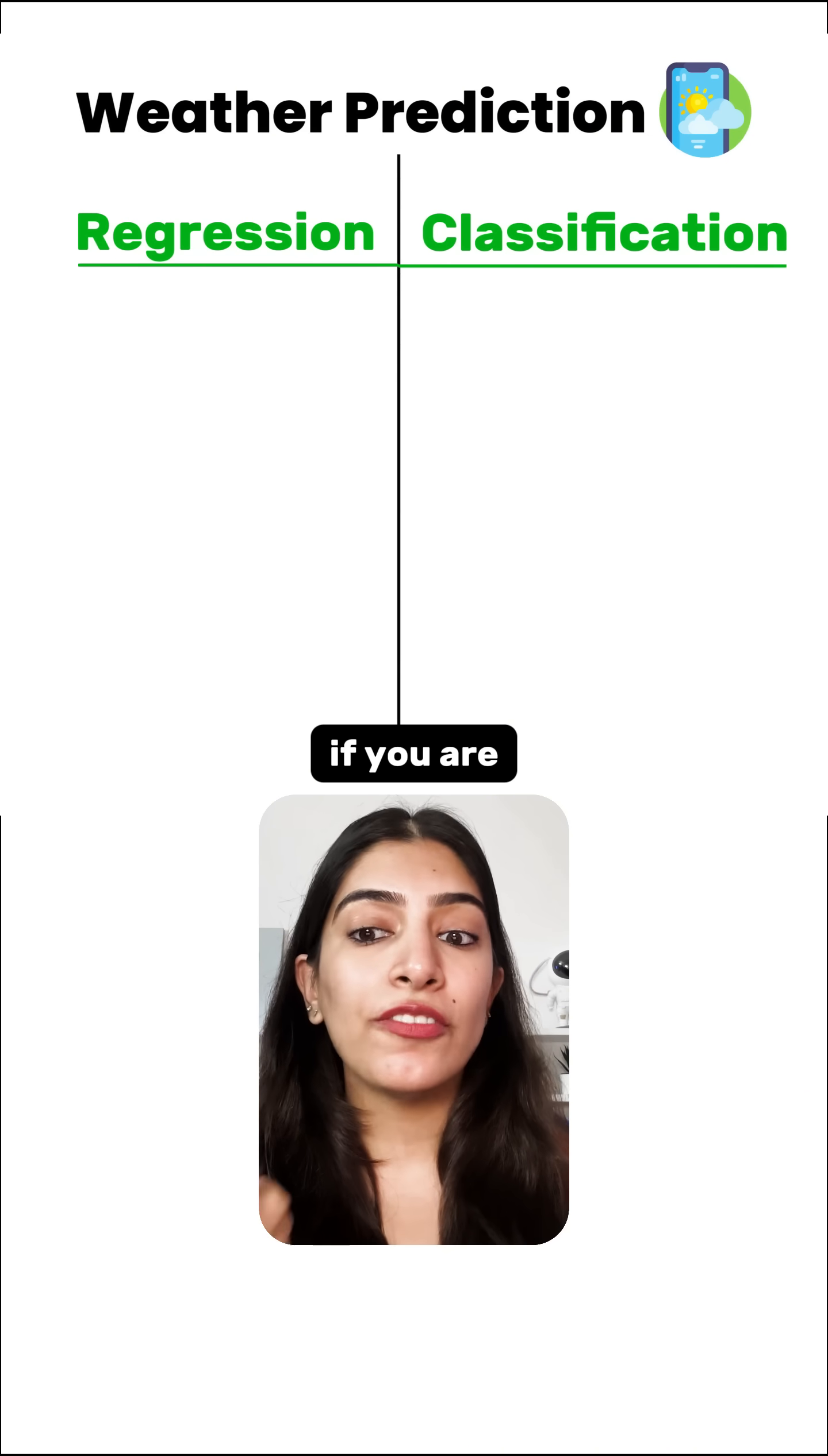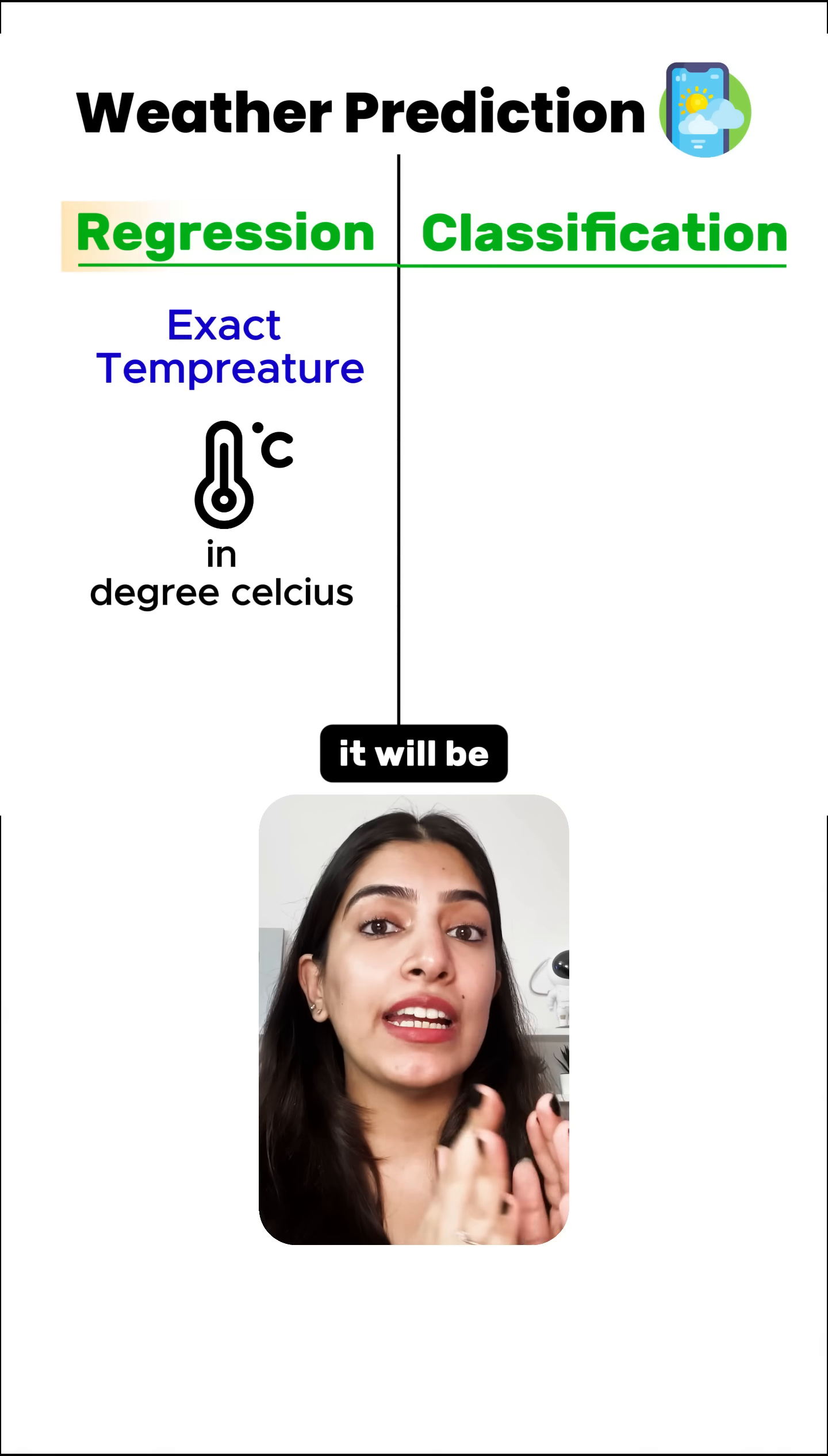Similarly, in weather prediction, if you are predicting the exact temperature that is going to be tomorrow, it will be a regression problem.